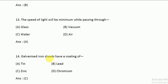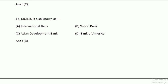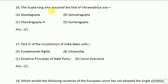Galvanized iron sheets have a coating of zinc. IBRD is also known as the World Bank. The Gupta king who assumed the title of Vikramaditya was Chandragupta II.